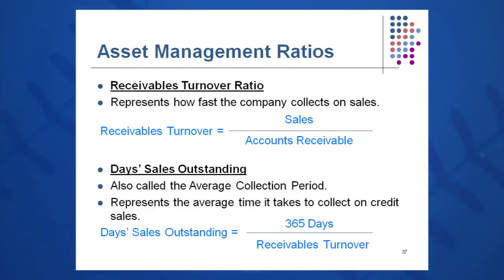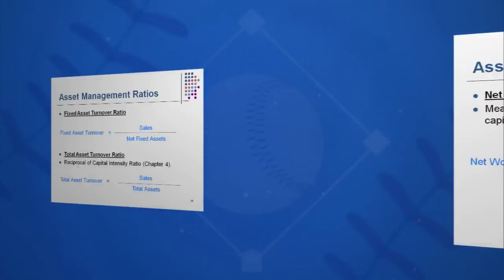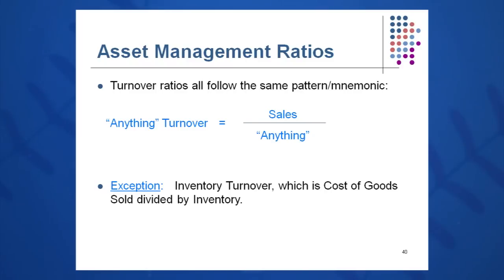Look for a pattern in these next three ratios. Net working capital turnover is sales over net working capital. Fixed asset turnover is total sales over net fixed assets. And total asset turnover is sales over total assets. If you look at these, you see that anything turnover is just sales over anything — with one exception: inventory turnover, which is cost of goods sold divided by inventory. So to memorize these turnover ratios, just do sales over anything, remembering that one exception.